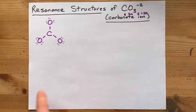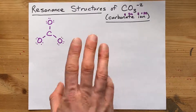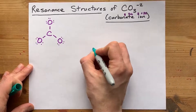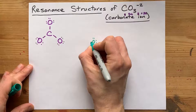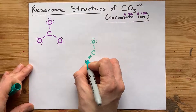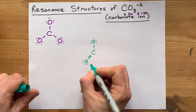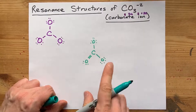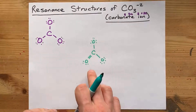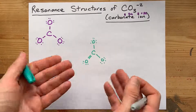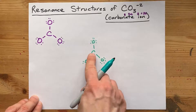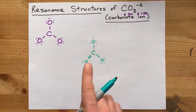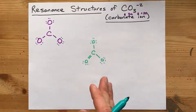The answer is technically all three. Let's redraw this with the carbon single bonded to the oxygen on top, double bonded to the oxygen on the bottom left, and single bonded to the other oxygen. We've still got 24 electrons, a complete octet on all atoms, and a double bond between carbon and one of the oxygens. That's a valid Lewis structure for the carbonate ion.